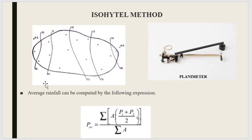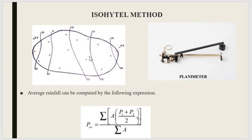The third method is the isohyetal method. Just as a contour is a line joining points of equal elevation, an isohyet is a line on a rainfall map of the basin joining places of equal rainfall. Here you can see a number of isohyets numbered 10, 11, 12, 13, 14, etc. All points along an isohyet receive the same rainfall — for example, 10 cm or 11 cm. This isohyetal map represents a more accurate picture of the rainfall distribution over a catchment area.